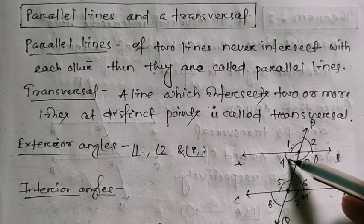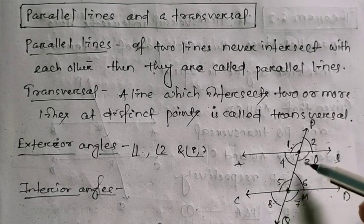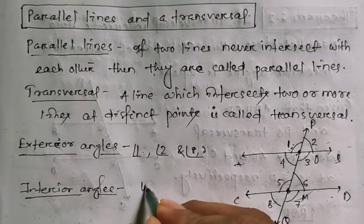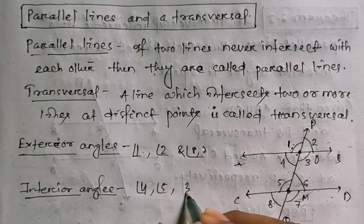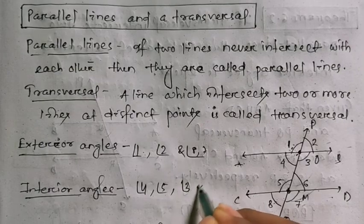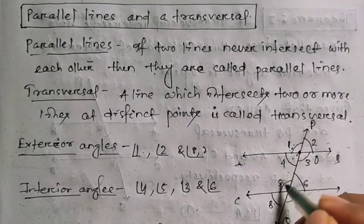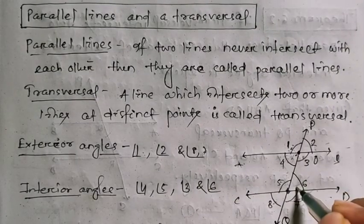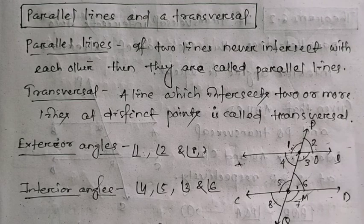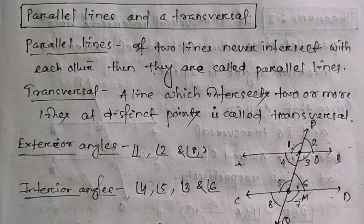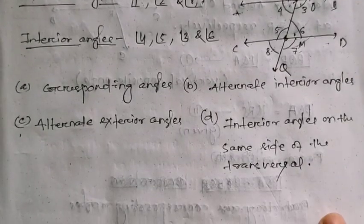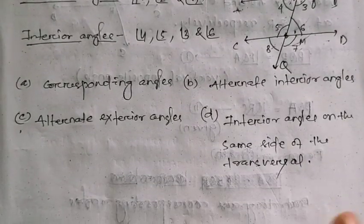Similarly, interior angles are those inside the two parallel lines — that means angles 3, 4, 5, and 6. So 4, 5, 3, and 6 are interior angles.